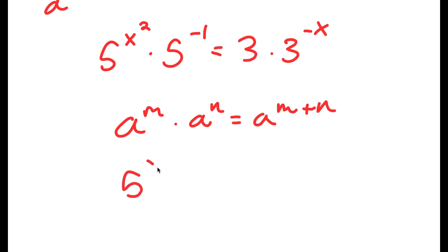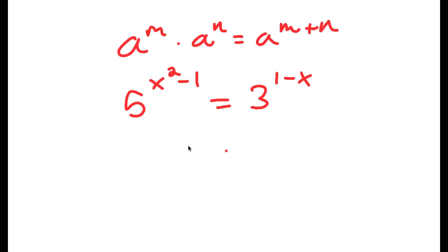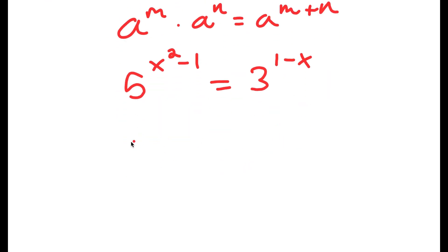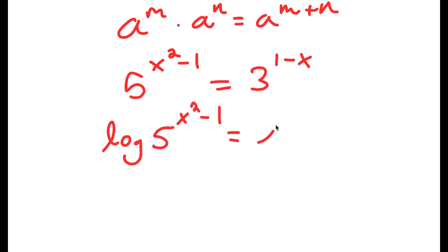I get 5 to the power of x squared minus 1, and this is equal to 3 to the power of 1 minus x. Now if I take the log on both sides, I get log 5 to the power of x squared minus 1 is equal to log 3 to the power of 1 minus x.